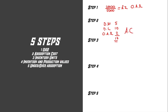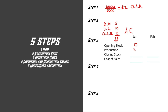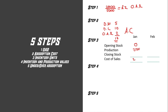Step three is to calculate the inventory units. We're going to create columns: one for the months and one for inventories. The opening inventory for January is zero because the question states there's no opening inventory in January 2020. Production is 2,500 units and cost of sales is 2,000 units. To get the closing inventory: opening inventory plus production minus cost of sales gives us 500 units, and those 500 units become the opening inventory for February.